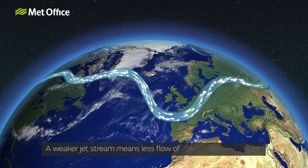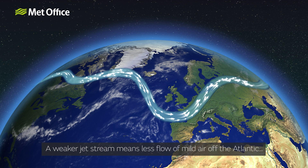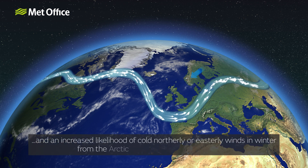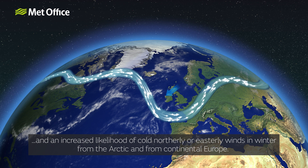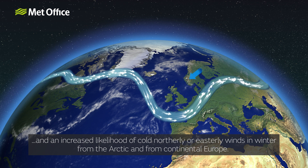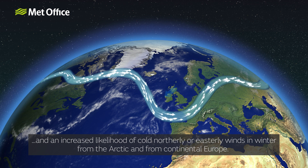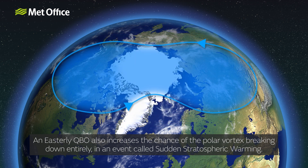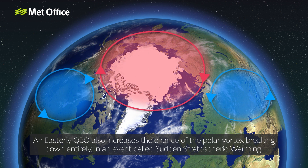A weaker jet stream means less flow of mild air off the Atlantic and an increased likelihood of cold northerly or easterly winds in winter from the Arctic and from continental Europe. An easterly QBO also increases the chance of the polar vortex breaking down entirely in an event called sudden stratospheric warming.